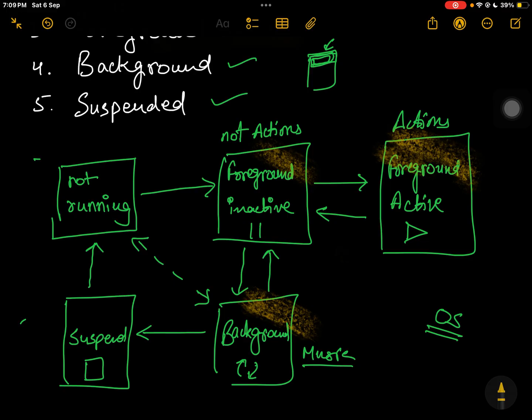So this is how you can explain the states to an interviewer. There could also be scenarios like background batch tasks — for example, updating the server every six hours. In that scenario, the app runs in the background every six hours to update the server, and for the rest of the time it is not in a running state. It will come to the background, then go to suspended, and then not running. Alternatively, the user might kill it directly. These are the scenarios depending on how you want your app to work.